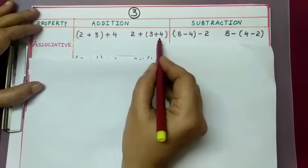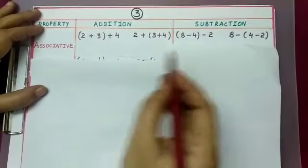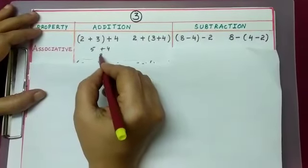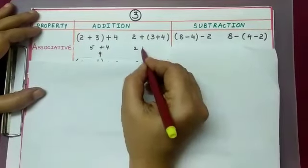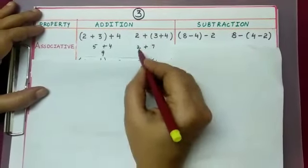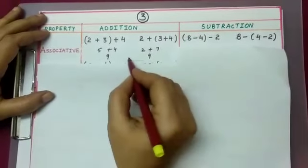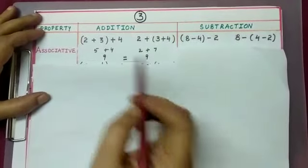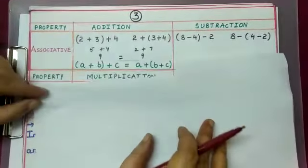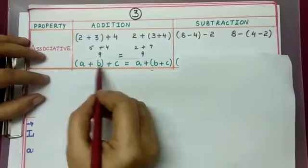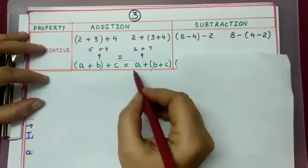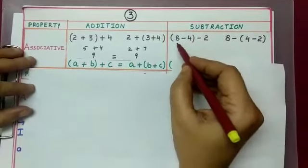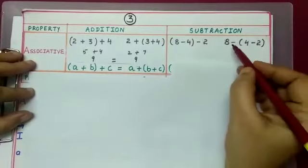Checking both cases: 2 plus 3 is 5, plus 4 equals 9; and 3 plus 4 is 7, plus 2 equals 9. Since 9 equals 9, integers follow associative property under addition. In general, for any three integers a, b, and c, (a plus b) plus c is equal to a plus (b plus c).